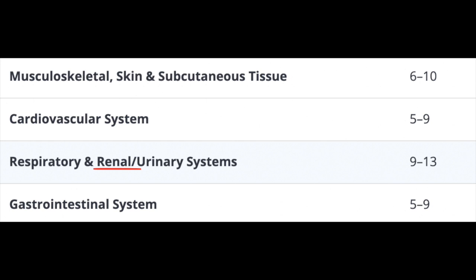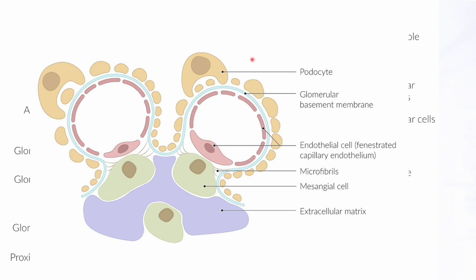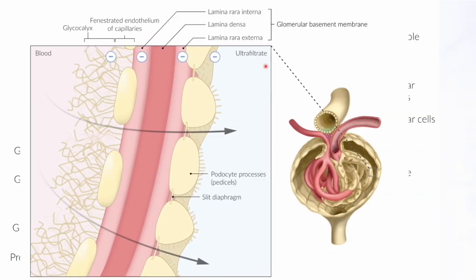Here in front of you is the glomerulus. The glomerular filtration barrier is made up of the endothelial cells, the glomerular basement membrane, and those yellow cells called podocytes. In cross-section, blood has to pass through these three layers in order to get into the Bowman space and make a filtrate, which will later become urine.